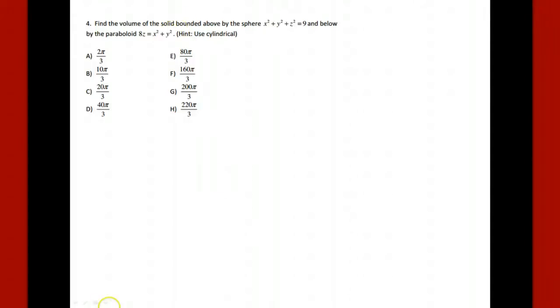Okay, we're supposed to find the volume of the solid bounded above by a sphere and below by a paraboloid. This particular question happens to come from one of my practice exams, the practice exam 3. And so anyway, they give us a huge hint to use cylindrical. So we'll take that hint and run with it. We have a sphere and we're bounded above by that and a paraboloid and we're bounded below by that.